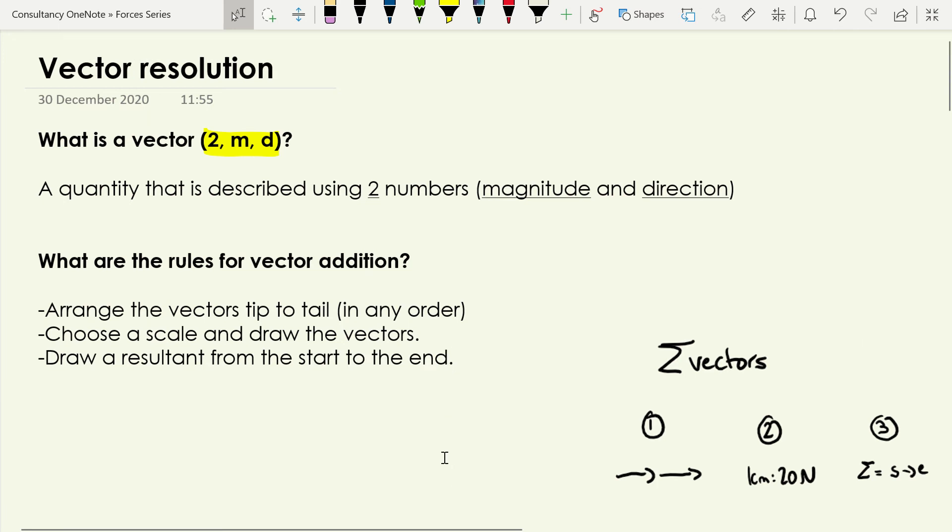And then if we're doing a scale diagram, we can measure the length of that resultant and the angle of that resultant. Or if we're going to do what we're going to move on to look at, we can use that diagram and some trigonometry and some Pythagoras to figure out the size of the resultant. So those are things we've met before.